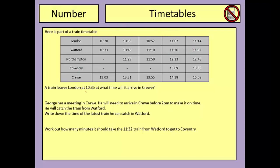So a train leaves London at 10.35 — what time will it arrive in Crewe? I'm going to look across for the train leaving London at 10.35. It stops at Watford, then Northampton at 11.29, doesn't stop in Coventry, and arrives into Crewe at 13.31 in the 24-hour time format.